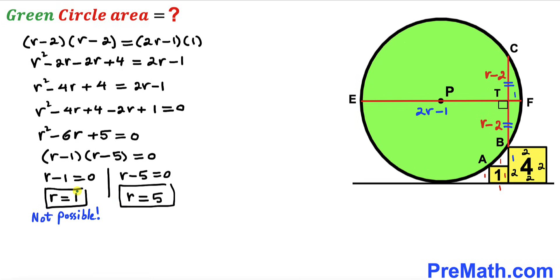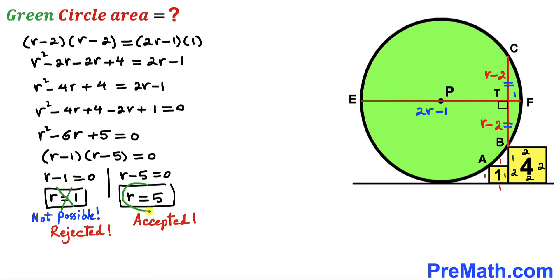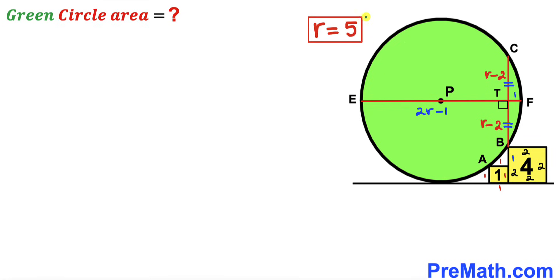Observing that r equals 1 is not feasible given the geometry of the figure, we reject that solution and accept r equals 5. Thus the radius of the green shaded circle is 5 units.